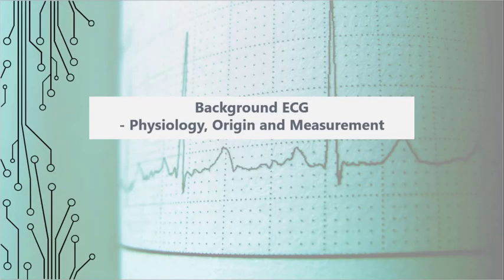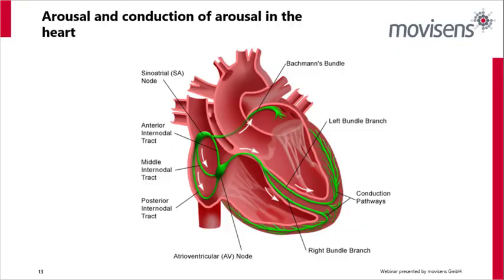Let's get into the heart of the matter. Arousal and conduction of arousal in the heart — the heart is a hollow muscle consisting of four different compartments or cavities. You can divide it into two halves in two ways: along the longitudinal axis into right and left hearts, and along the horizontal plane into atria and ventricles.